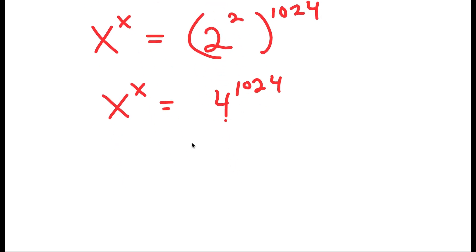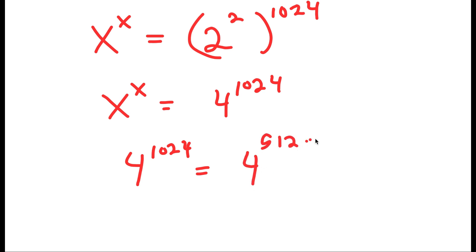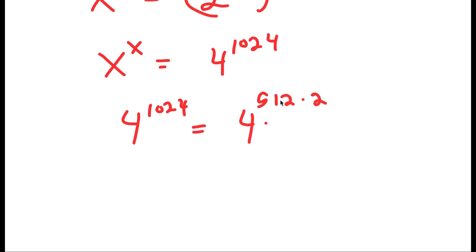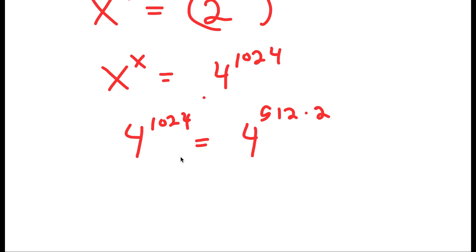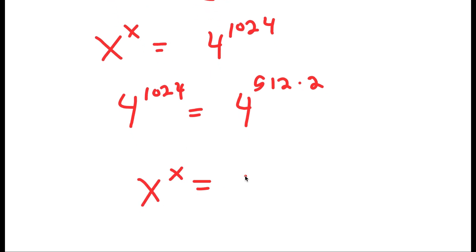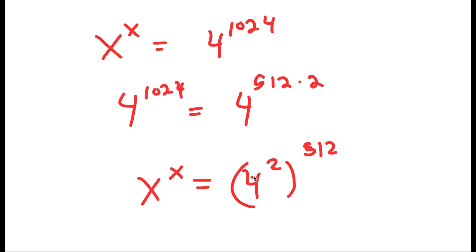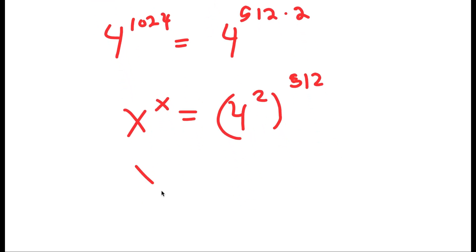Now I can rewrite 4 to the power of 1024 as 4 to the power of 512 times 2, and using the same property this turns into 4 to the power of 2 to the power of 512. And since 4 to the power of 2 is 16, this becomes 16 to the power of 512.